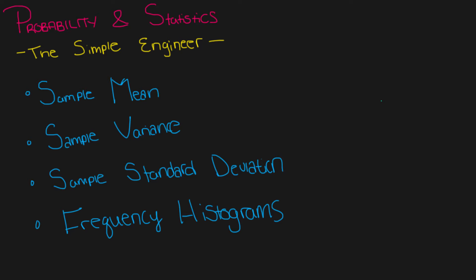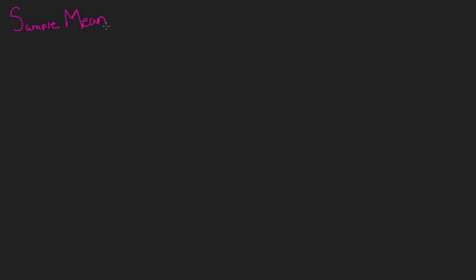First, let's take a look at sample mean. Sample mean is just a way to calculate the average from a sample of data. Say you have 300 million people in the United States and statisticians want to figure out how often people brush their teeth every day. Obviously you can't go to all 300 million people, so what they do is take a random sample of, say, a thousand people and get that information from them.